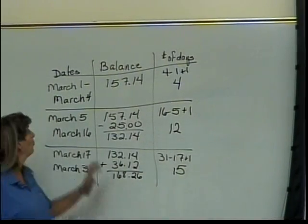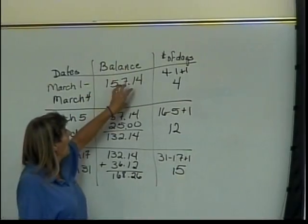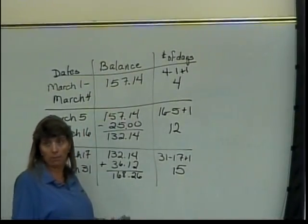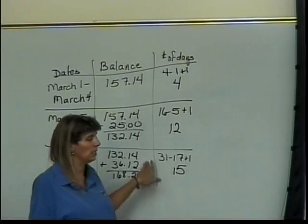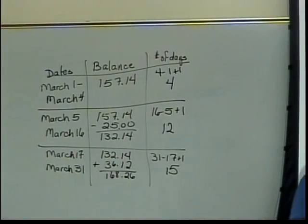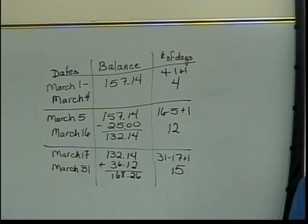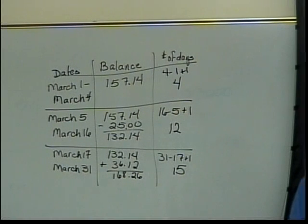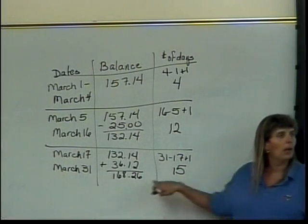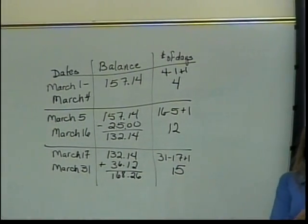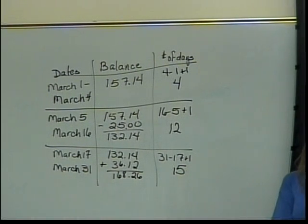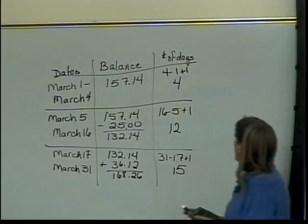Now, this should look very familiar. If we ignore the dates column, here we have the money or the balance number. In the second column, we have the frequencies: there were 4 days of this balance, 12 days of this balance, 15 days of that balance. We can then plug that into our calculator and calculate the mean or the average daily balance. Is this one where we have to use the L1, L2 thing? Yes — the balance values go in L1 and the number of days goes in L2.